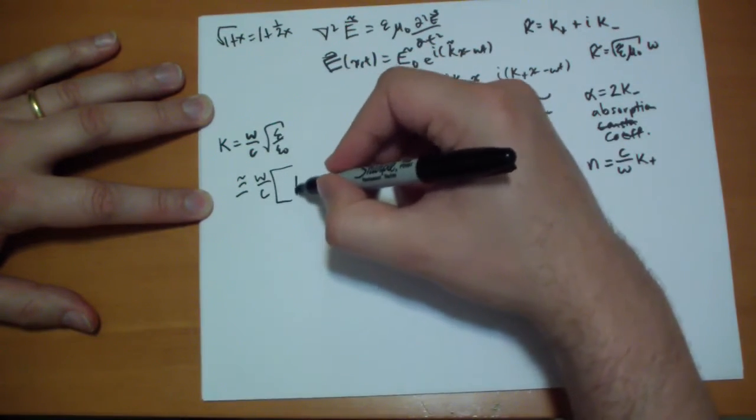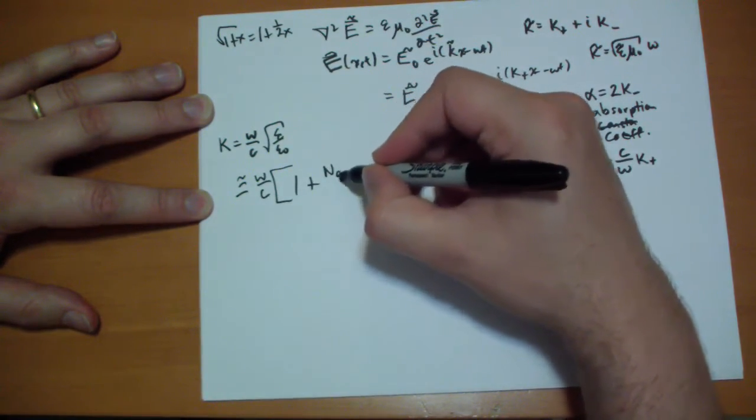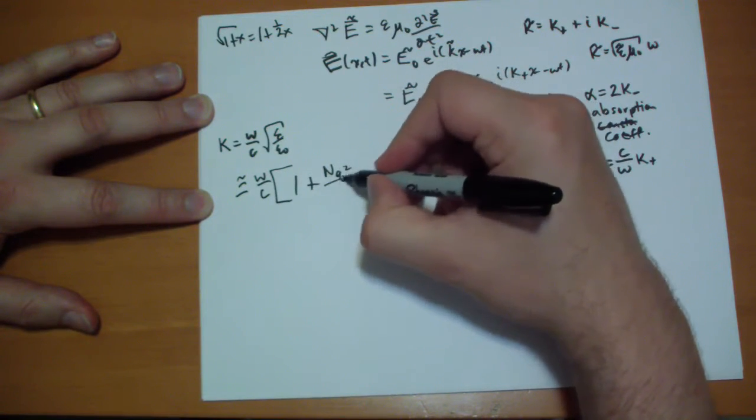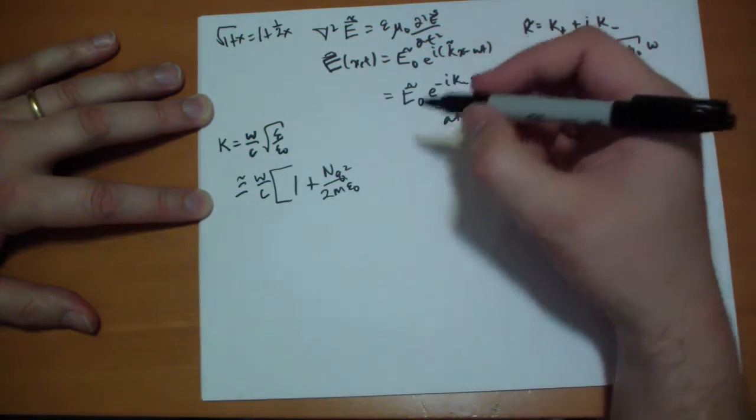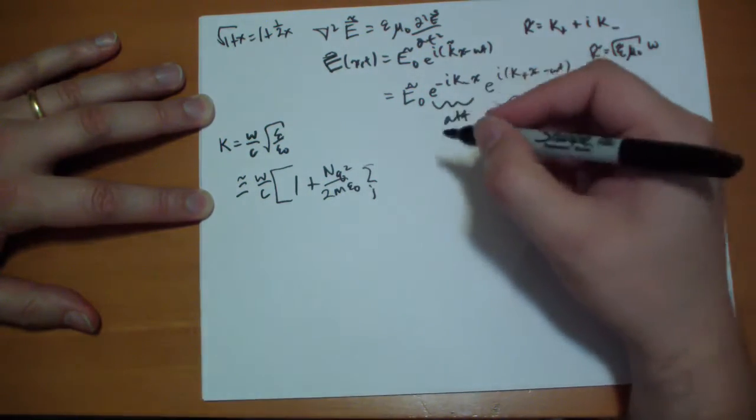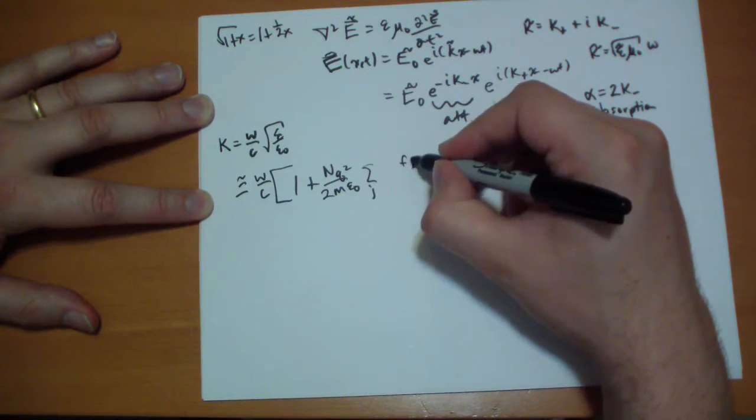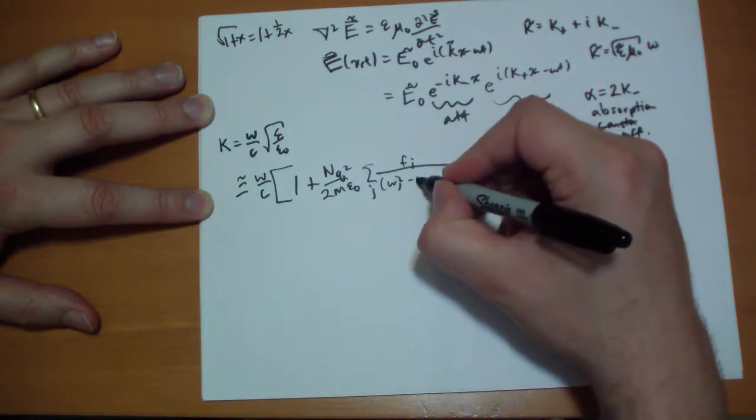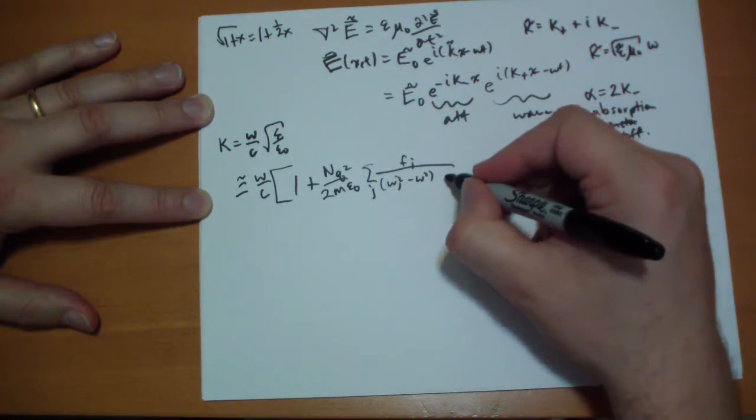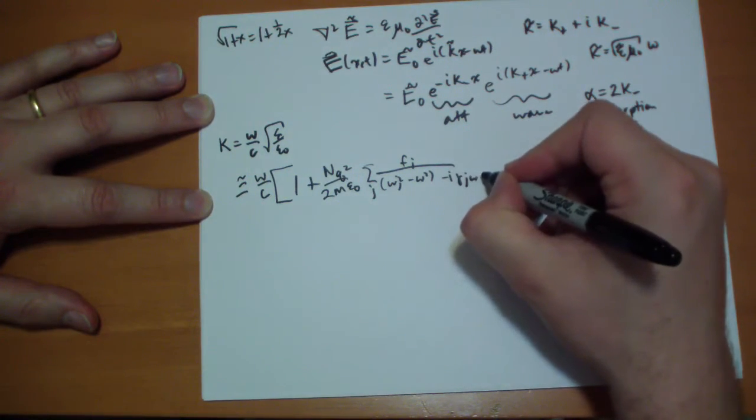Times the different frequencies, number of electrons per frequency, resonant frequency minus the omega squared minus its own damping. That's kappa.